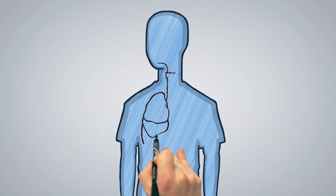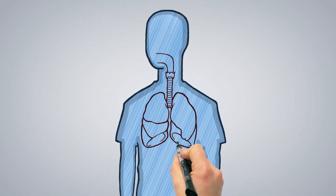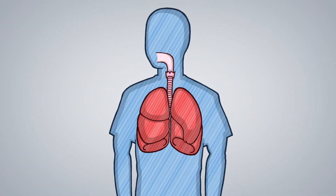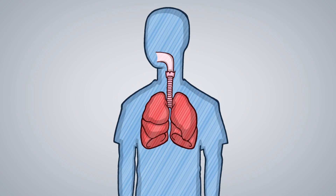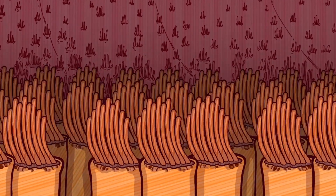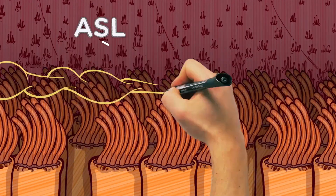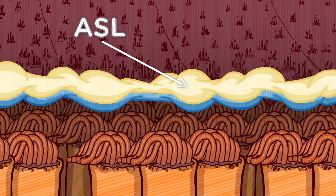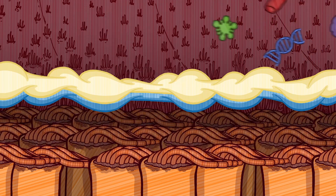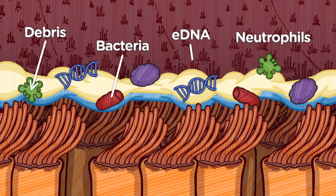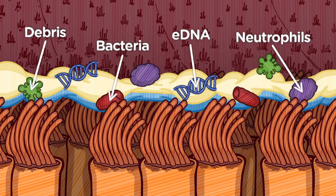With every breath, we draw bacteria and other microorganisms into our lungs. Our airways are lined with airway surface liquid, or ASL, composed of paraciliary liquid and mucus that traps debris.